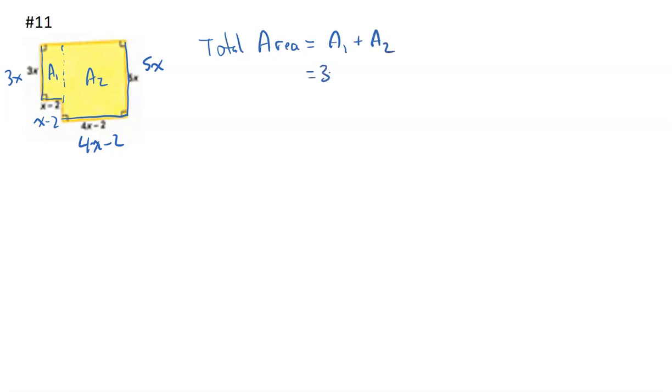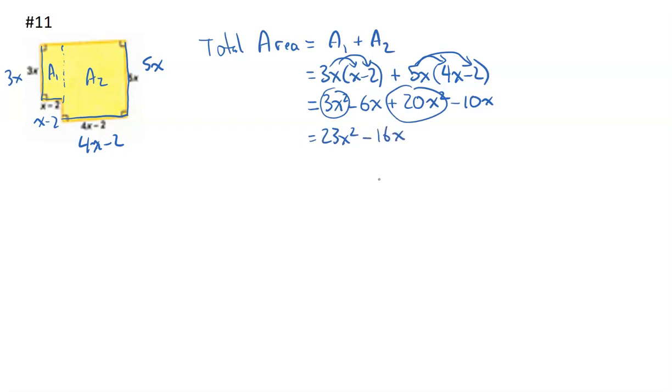If I calculate those two areas and add them together, I get the total area. So the total area equals the first area plus the second area. The first area is 3x times x minus 2, length times width. And the second area is 5x, notice I'm always choosing the monomial first, 5x times 4x minus 2. That gives me 3x squared minus 6x plus 20x squared minus 10x. Gathering together these terms, 23x squared minus 16x. So that's the addition, we've used the addition.